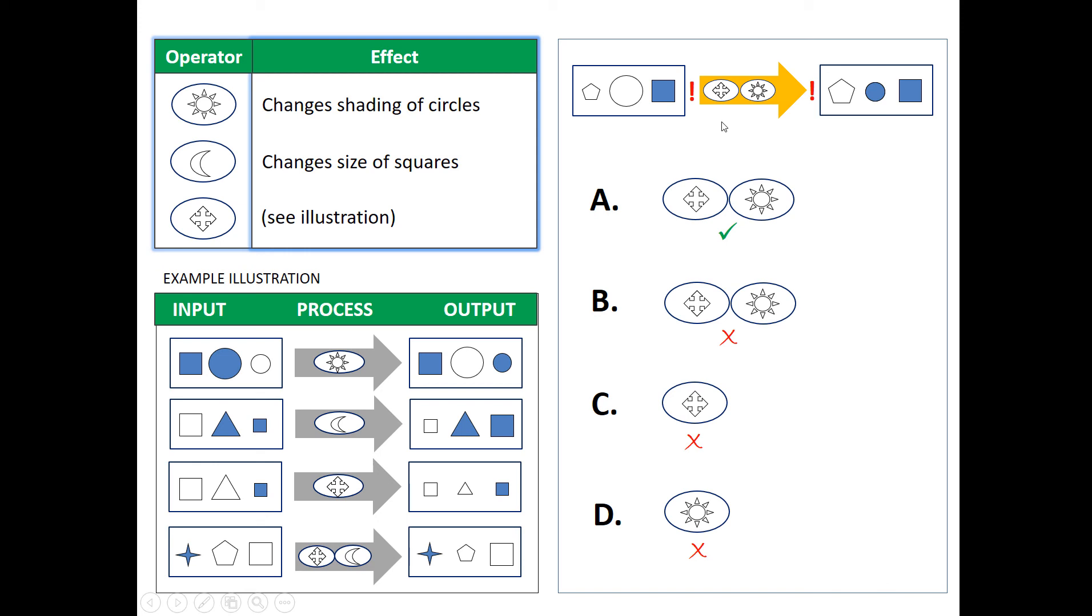because as I've explained earlier, this quad arrow would make pentagon bigger, circle smaller. And the sun shape would change the shading of the circle, unshaded to shaded. And that's it.